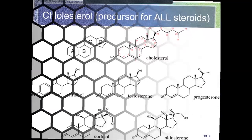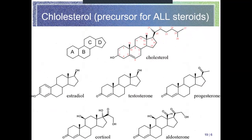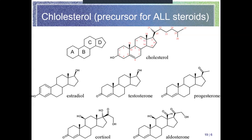Cholesterol is the precursor for all your steroids - that's why the picture was there. The category we're talking about today are steroids, and steroids are a class of hormones. In two weeks we're going to spend a whole week talking about hormones. Notice they all have those three hexagons and the pentagon. You have your estrogens - three different types - testosterone, the sex hormones, and cortisol. Anything ending in '-one' or looking like this is coming from cholesterol. It is a steroid and it is a lipid.